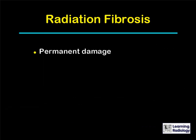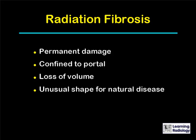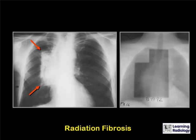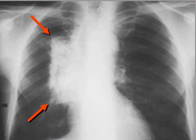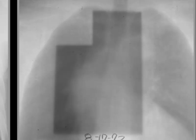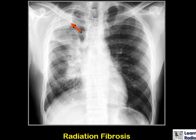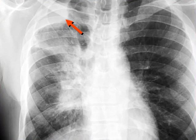Radiation fibrosis implies permanent damage and is confined to the radiation portal. There is usually a loss of volume associated with radiation fibrosis. It is diagnosable because it presents with a shape that is extremely unusual for a natural disease, with straight edges and 90-degree corners corresponding exactly to the radiation portal film. There may also be bronchiectasis within the radiation portal and pleural thickening. Another example shows a very sharply demarcated area of increased density in the right hilar region with very sharp angles as its edges.